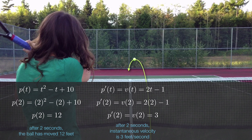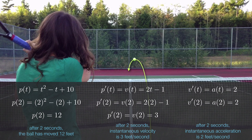If we want to find an equation that models the acceleration of the tennis ball, I just take the derivative of my velocity function, which is v′(t), and we can call that a(t) since it models acceleration. This function will give me acceleration at any time, so if I want to know acceleration two seconds after I hit the ball, I just plug in t = 2 and I get instantaneous acceleration — acceleration at that particular instant, two seconds after I hit the ball.